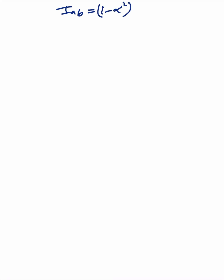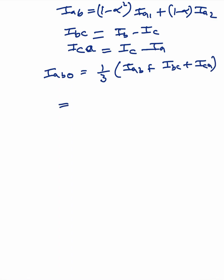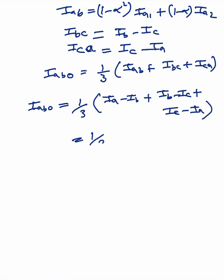Similarly, Ibc = Ib − Ic and Ica = Ic − Ia. The zero sequence current in the delta winding is Iab0 = (1/3)(Iab + Ibc + Ica) = (1/3)(Ia − Ib + Ib − Ic + Ic − Ia) = (1/3)(0) = 0. So Iab0 = 0.